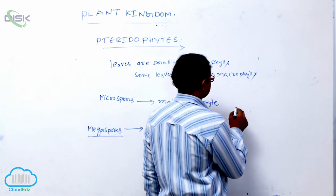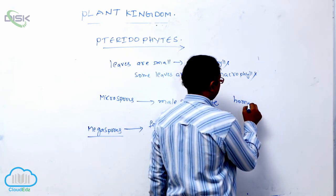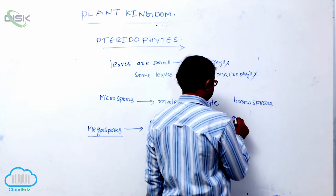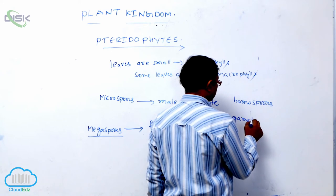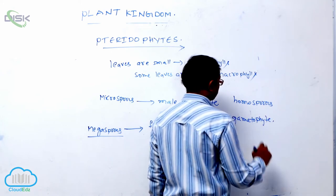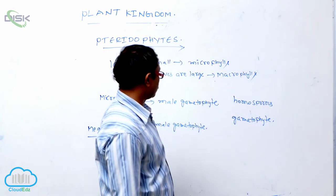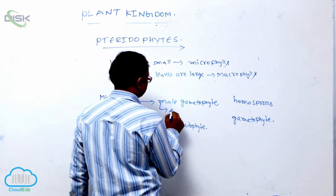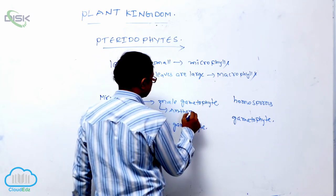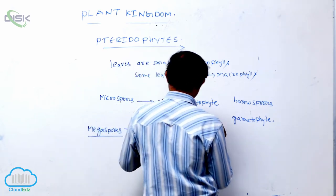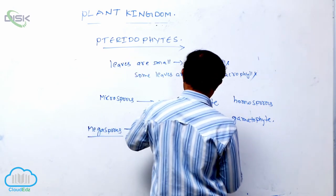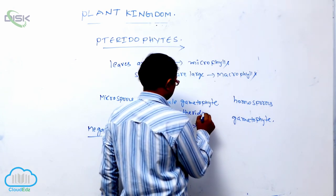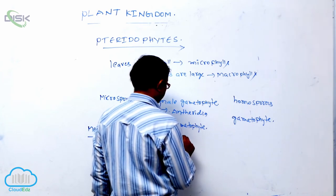In homosporous conditions, the gametophyte is bisexual, having two types of reproductive organs: antheridia and archegonia. The male gametophyte has antheridia, and the female gametophyte produces archegonia.